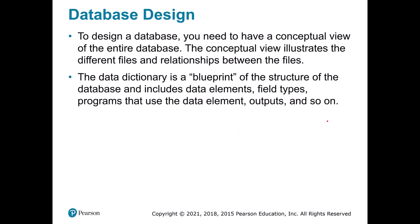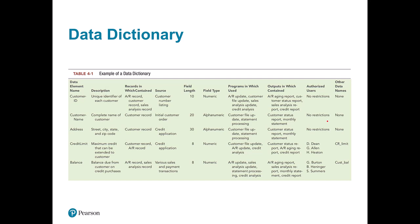When we design a database we have a conceptual view, which usually comes out in something called a data dictionary. A data dictionary is a blueprint of our database where we describe what data we want to store. For example, it lists each field in the database, talks about where it comes from, how long it is, where it's used, and any access restrictions on it.